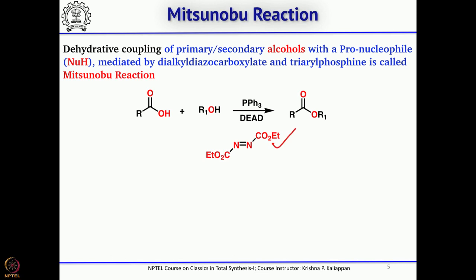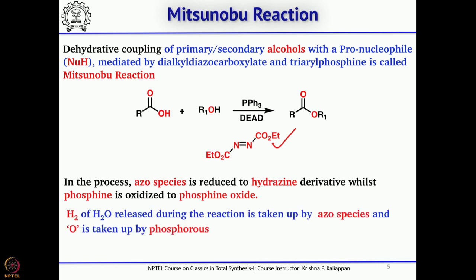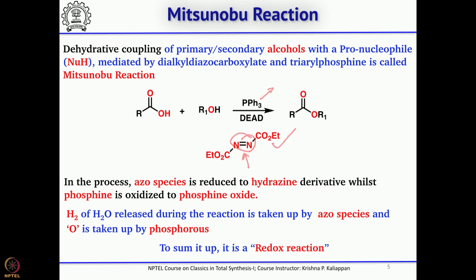One can also use diisopropyl azodicarboxylate. In this reaction, the azo reagent will be reduced to get the corresponding hydrazine derivative and the triphenylphosphine will be oxidized to triphenylphosphine oxide. The overall process of esterification consumes the water molecule produced: hydrogen goes to the diethyl azodicarboxylate and oxygen goes to triphenylphosphine oxide. Basically it is a dehydrating reaction, and one can also call it a redox reaction because triphenylphosphine gets oxidized and DEAD gets reduced.